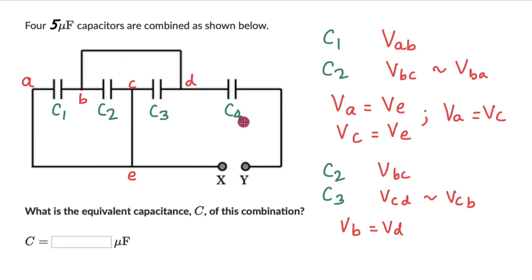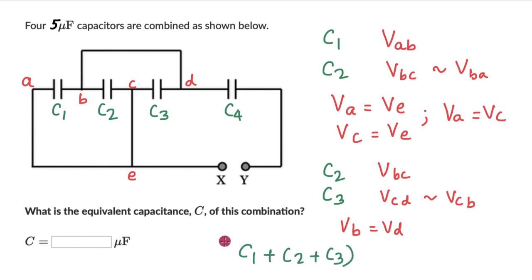So C1, C2, and C3 are all connected in parallel because the potential drop across each one of them is the same. For C1, C2, and C3, we can find the equivalent capacitance by simply adding them: C1 plus C2 plus C3. Since each is 5 microfarads, the equivalent capacitance is 15 microfarads. We can then replace all of that with just one capacitance.